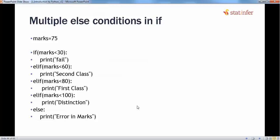One more variant of the if-else statement is multiple conditions using elif. How do we add multiple if conditions? By using the elif operator. How it works: if any of the statements is true — for example, it will first check the condition mark less than 30 — if it's true, it will print 'fail' and break out of the whole if-elif-else block and move on to the next part of the code.